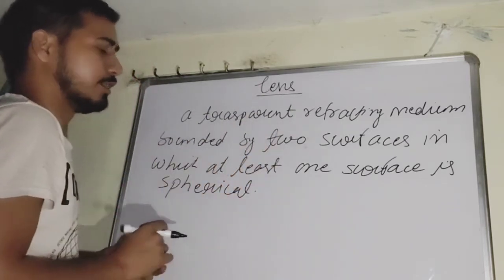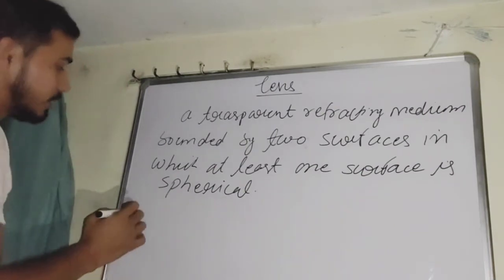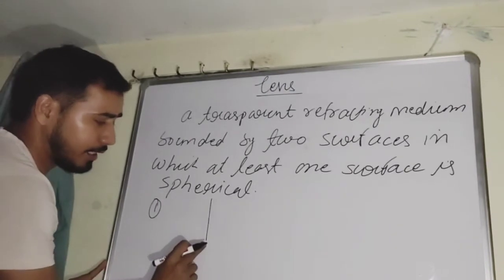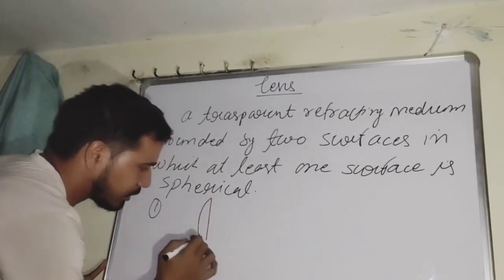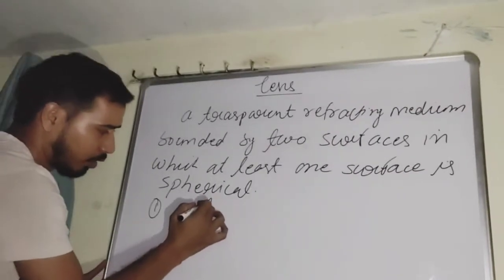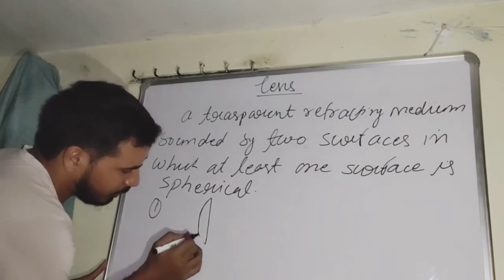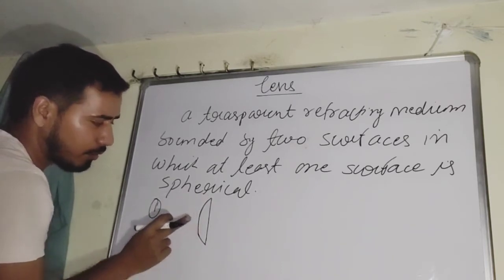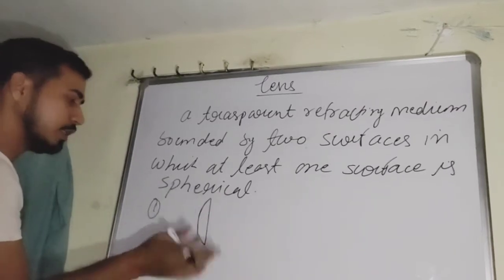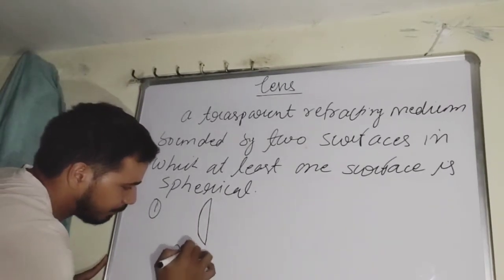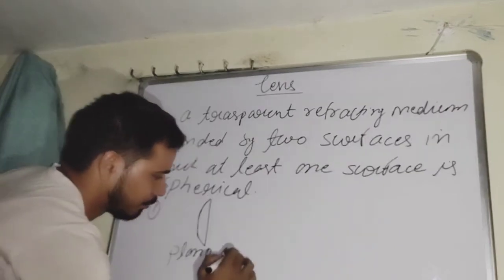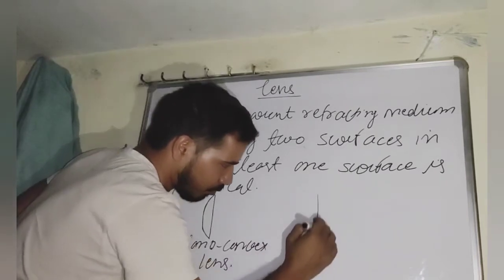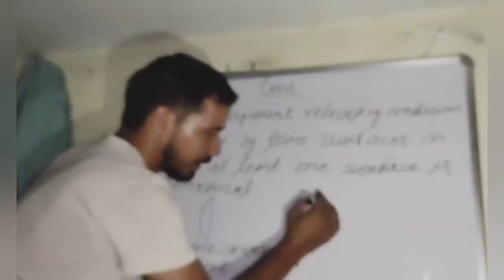Let's discuss the six kinds of lenses. The first kind: when the first boundary is plane and the second boundary is convex type, the right side of the refracting medium is plane and the second boundary is convex. The lens formed is called a plano-convex lens — one boundary is a plane surface and the other is a convex surface.